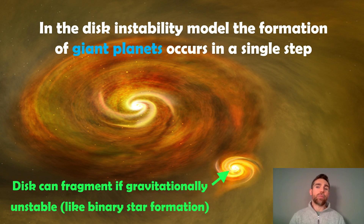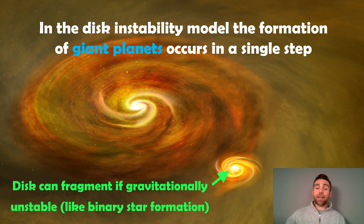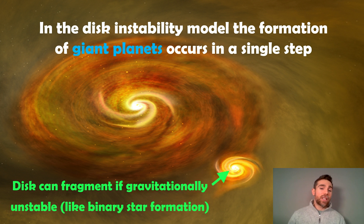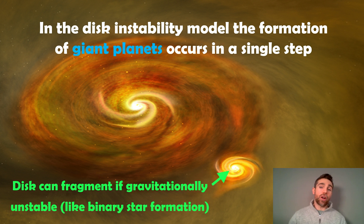In the disk instability model, the formation of the planets occurs in a single step quite rapidly. You get the star forming in the center of the disk, and then you can get a giant planet forming further out. What happens is the disk itself becomes gravitationally unstable and you get a localized collapse, then a planet forms. Interestingly, if you've got a bigger disk or a larger gravitational instability, you can actually get a binary star system forming in exactly the same manner.